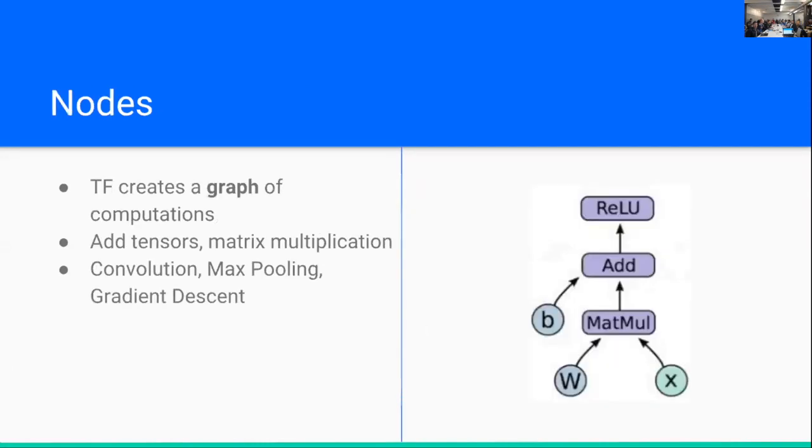Now, the way TensorFlow works is that we create a graph of different computations in our machine learning system. Each different computation takes some number of tensors as input and produces one or more tensors as its output. Examples of computations would just be like adding two vectors together or performing matrix multiplication. There's some more complicated computations like 2D convolution, max pooling, and then learning algorithms like gradient descent.